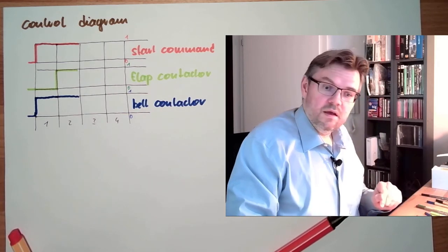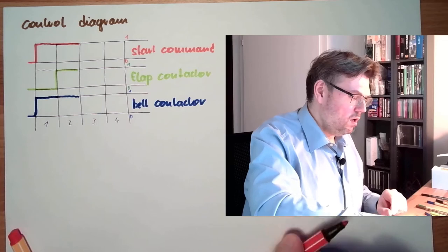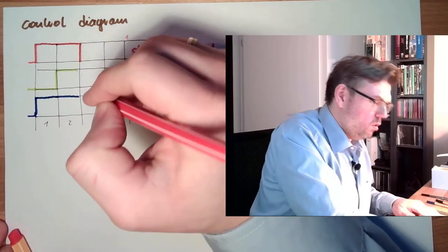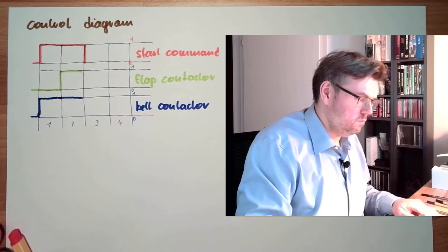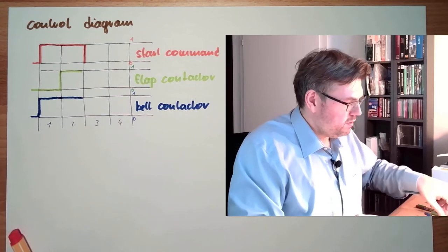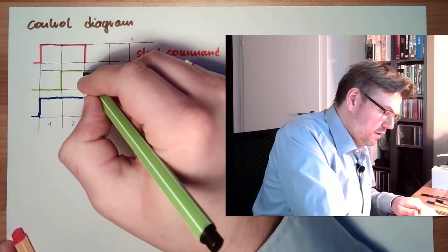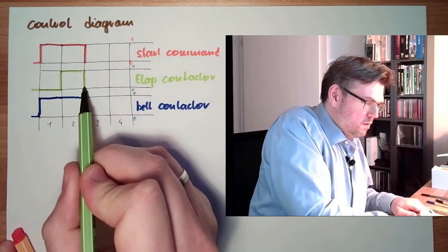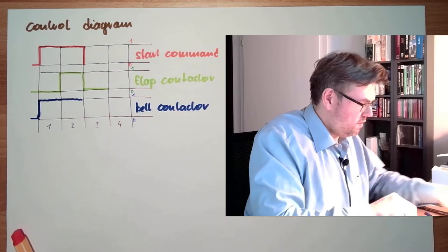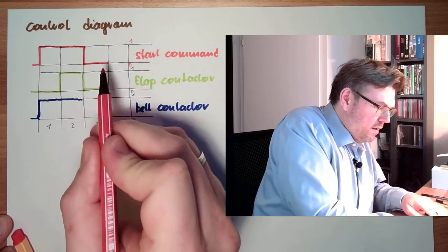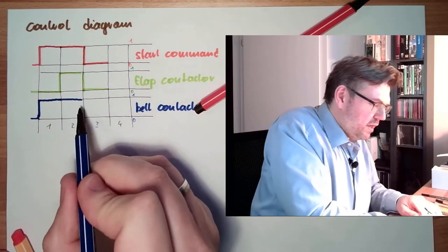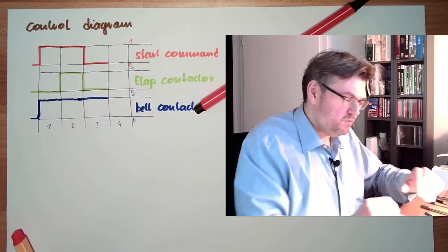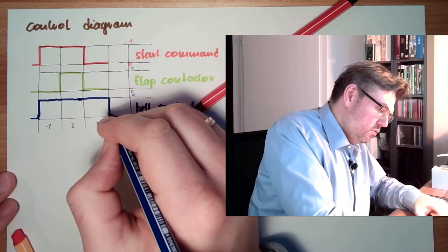Then, if the start command now vanishing, go away. Then the first thing which needs to go away is the flap conductor. The belt conductor shall stay on. And only after the flap is fully closed, the belt conductor shall also go away.